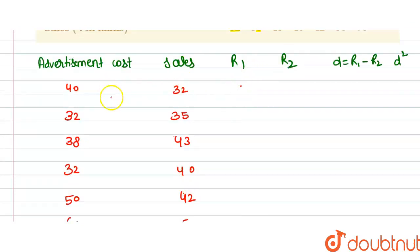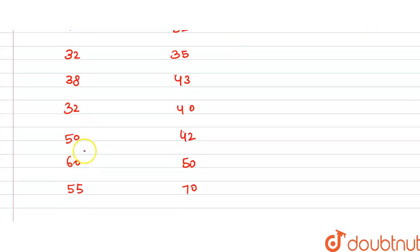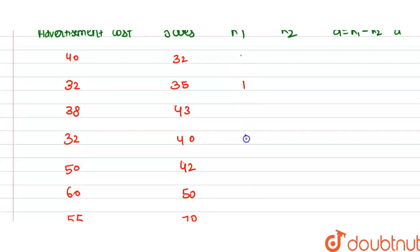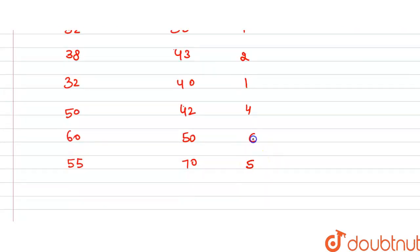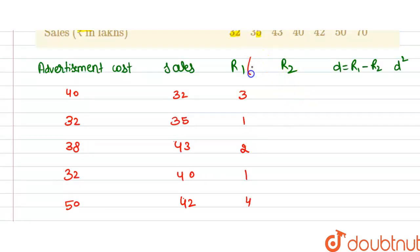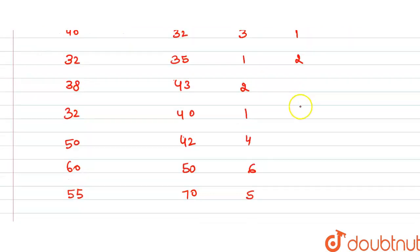Rank one is assigned to advertisement cost — we give the lowest value rank 1 and the highest value the maximum rank. So lowest is 32, which gets rank 1 (tied). Then 38 gets rank 2, 40 gets rank 3, 50 gets rank 4, 55 gets rank 5, and 60 gets rank 6. Similarly for sales (rank 2), we assign rank 1 to the smallest sale, then 2, 3, 4, 5, 6, and 7.